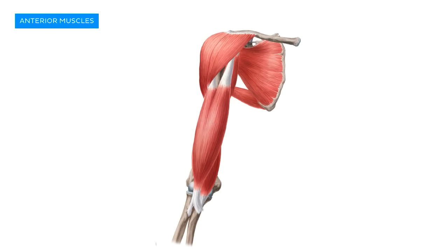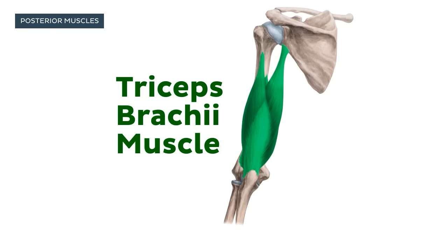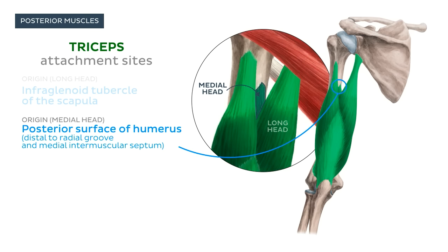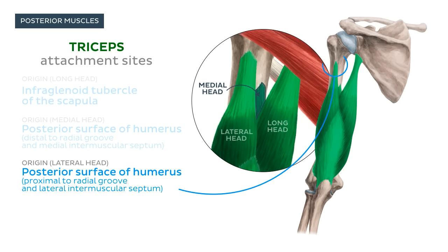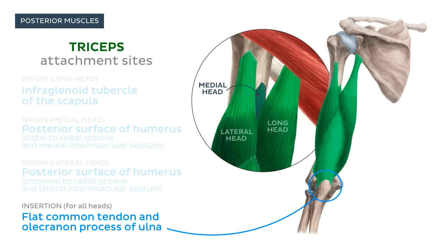Now let's turn our attention to the posterior or dorsal group, beginning with the triceps brachii. As its name suggests, the triceps brachii muscle has three heads. The long head has its origin or proximal attachment at the infraglenoid tubercle of the scapula. There is also a medial head, the smallest of the three, arising from the posterior surface of the humerus distal to the radial groove and medial intermuscular septum. The lateral head also has its proximal attachment on the posterior surface of the humerus, but proximal to the radial groove and the lateral intermuscular septum. The three heads fuse into a flat common tendon which crosses the elbow before inserting into the olecranon process of the ulna.